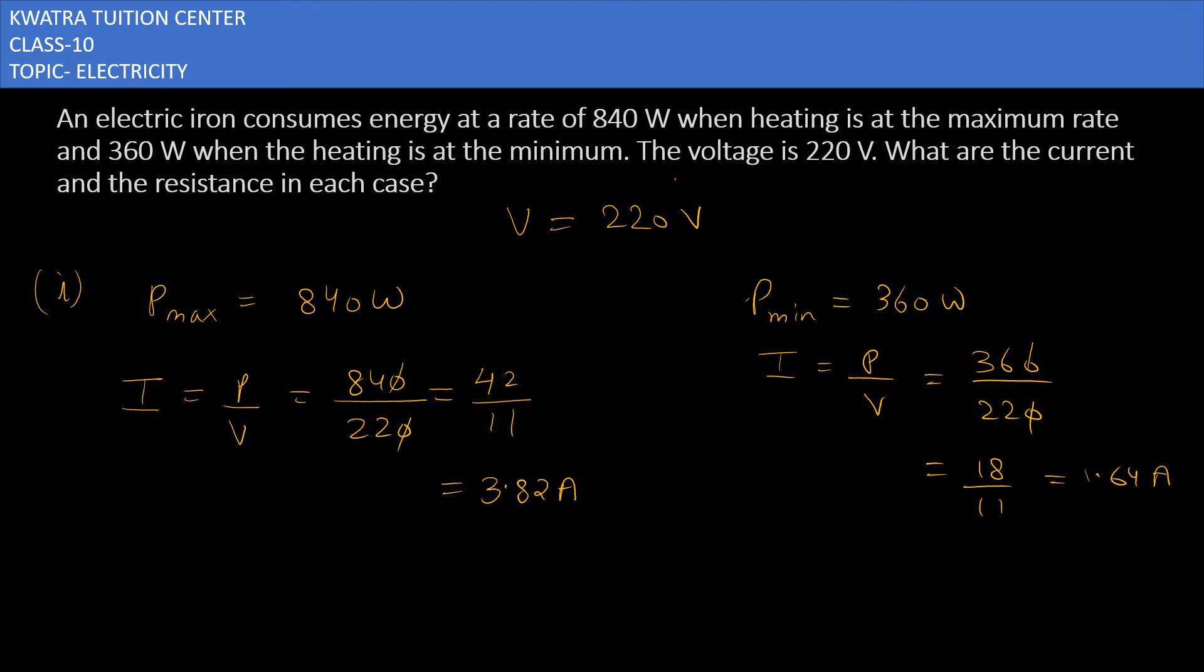Now what is your resistance? Find out in both cases. R will be equal to V over I in both cases. In the first case, V value is 220, I in this case is 3.82, or you can put 42 over 11, that will be very easy for you to calculate.